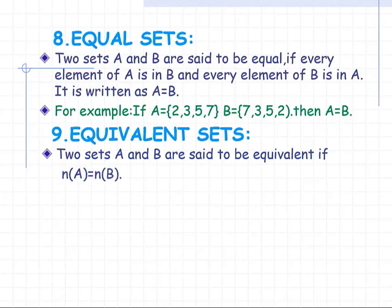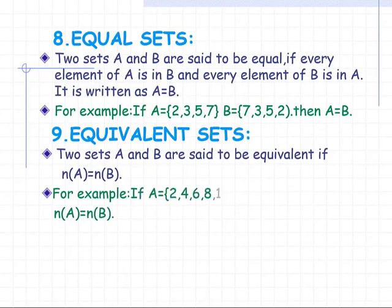Equivalent sets: two sets A and B are said to be equivalent if the number of elements of A equals the number of elements of B — that is, n(A) = n(B). For example, if set A has 5 elements and set B also has 5 elements, then A and B are equivalent sets.